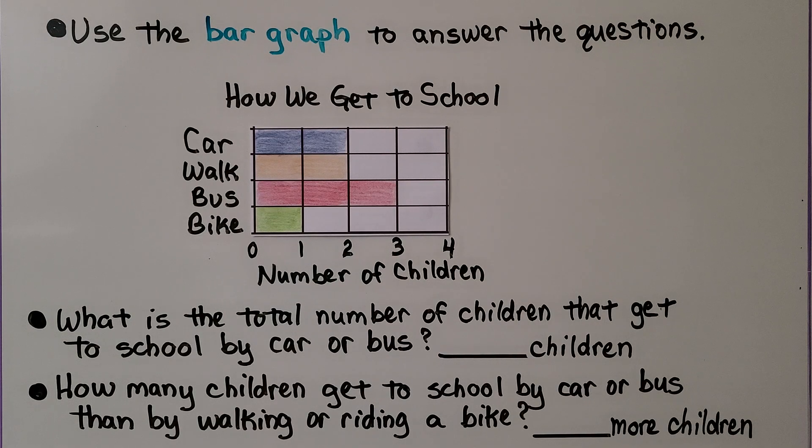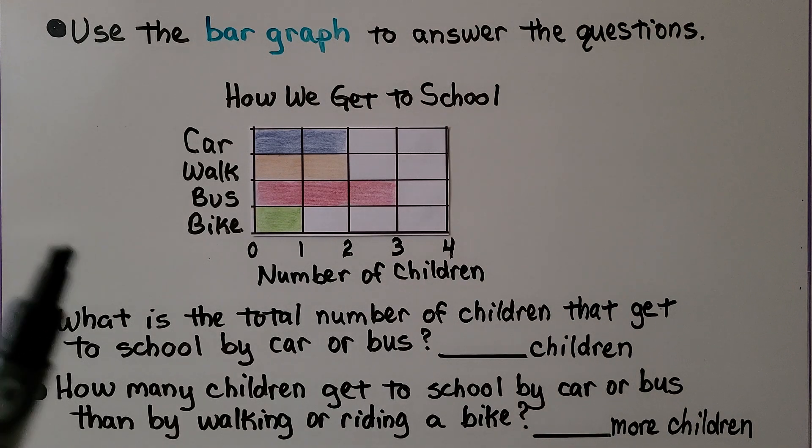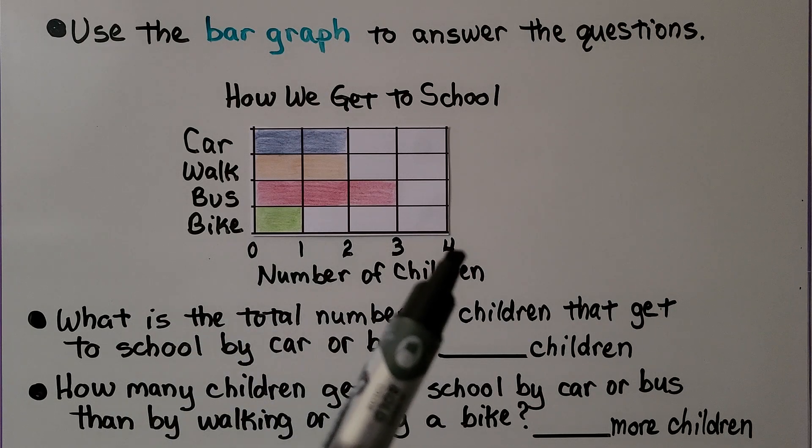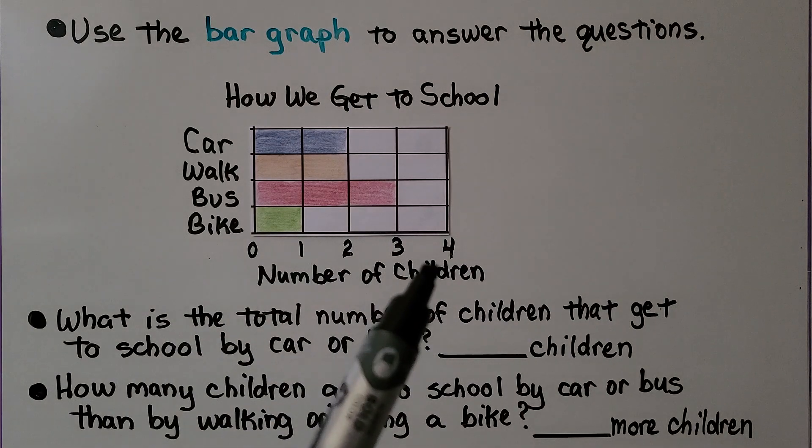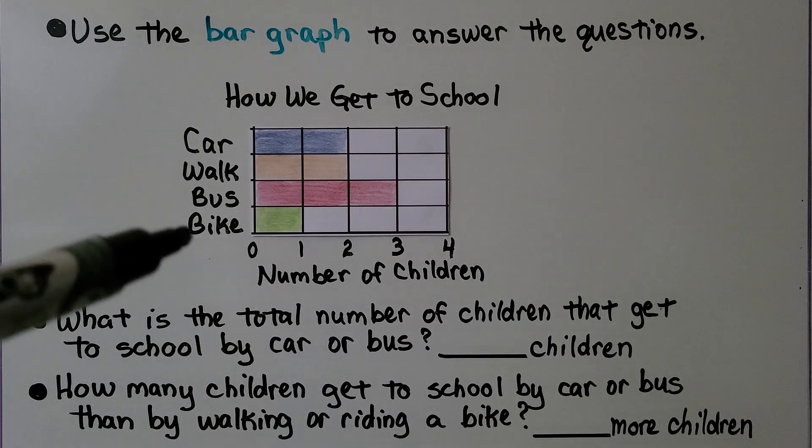This one says use the bar graph to answer the questions. Let's look at the bar graph. It says how we get to school and now the scale is down here and it's saying this is the number of children and the choices are car, walk, bus, or bike.